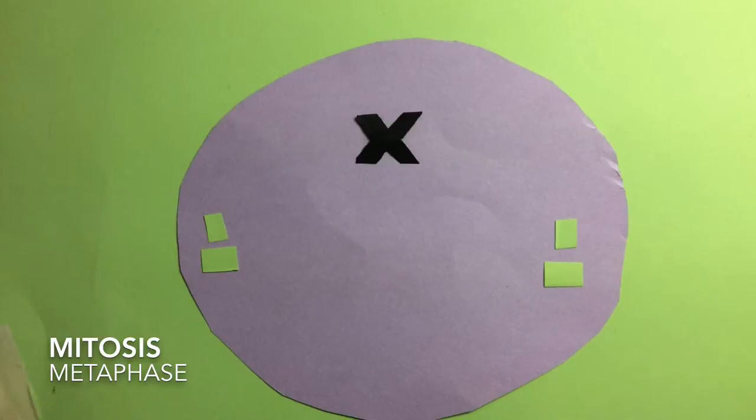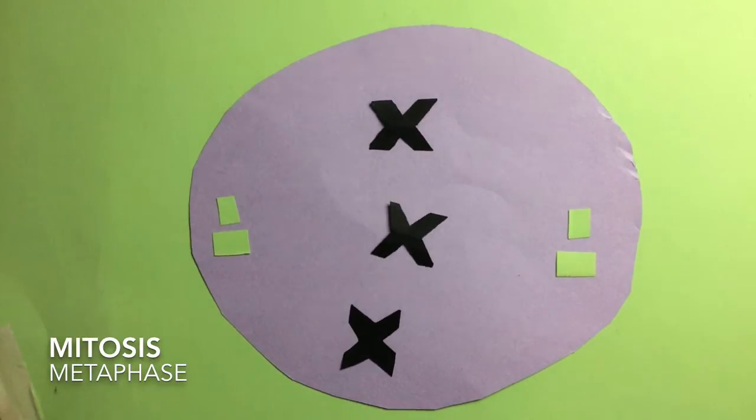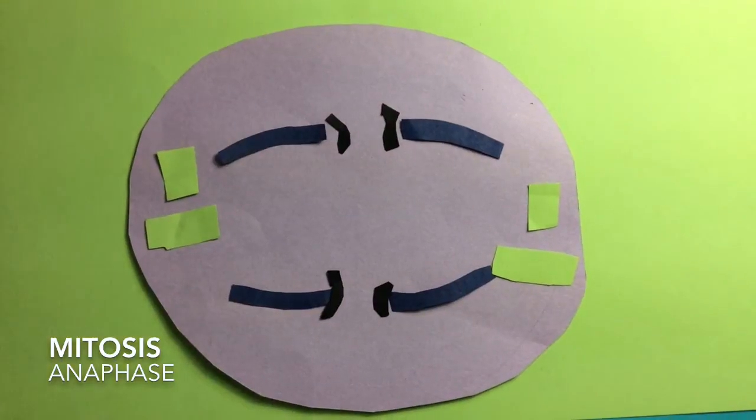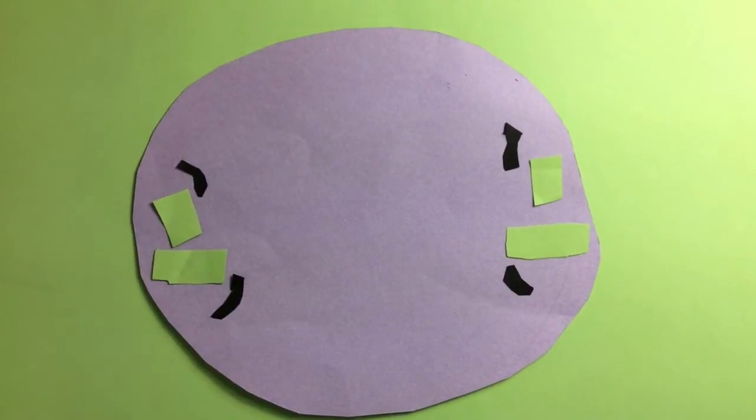In metaphase, the sister chromatids line up in the middle of the cell. In anaphase, the sister chromatids of each replicated chromosome separate.